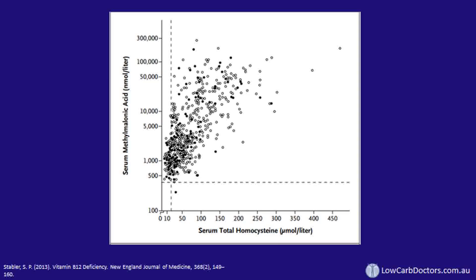Methylmalonic acid is the best test for B12 deficiency. On the graph, the dashed line represents three standard deviations above normal, and very few people with confirmed B12 deficiency fall under that line. So you're going to miss very few cases of B12 deficiency if you use methylmalonic acid with an appropriate cutoff. In principle, if you suspect B12 deficiency, doing methylmalonic acid testing is a good idea.